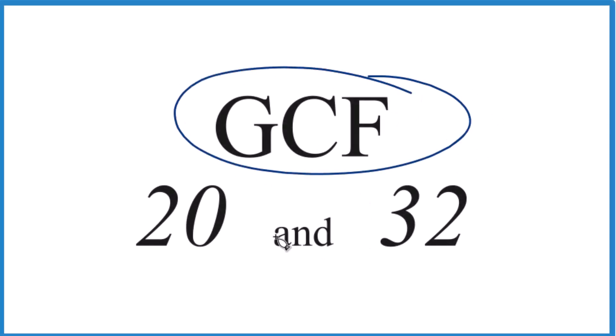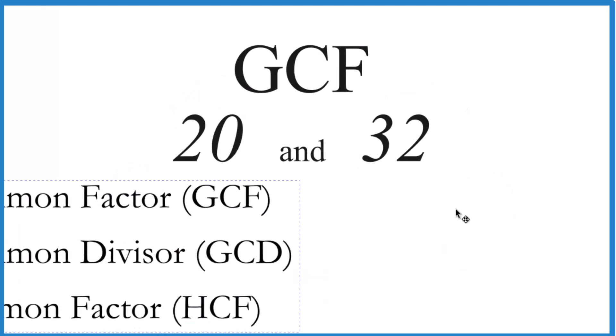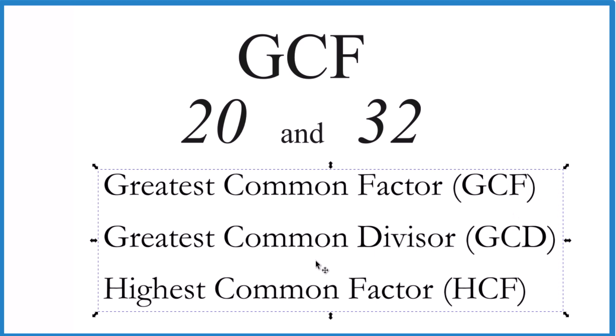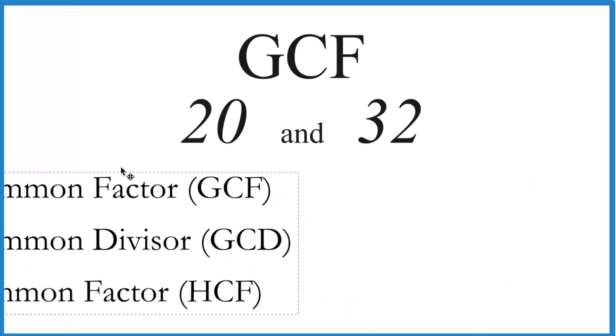Let's find the greatest common factor for 20 and 32. The GCF is sometimes called the greatest common divisor or highest common factor. I like greatest common factor, so we'll use that.